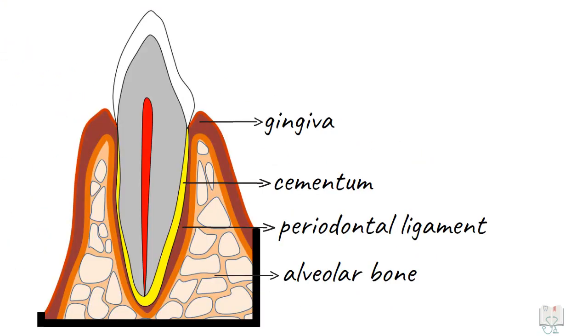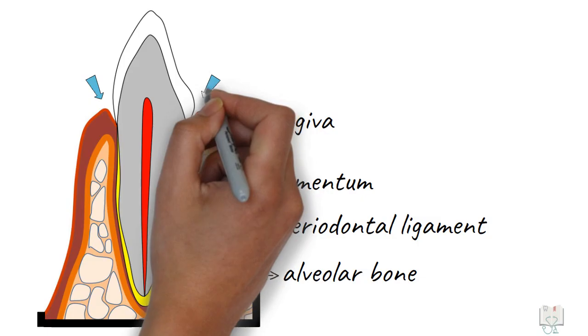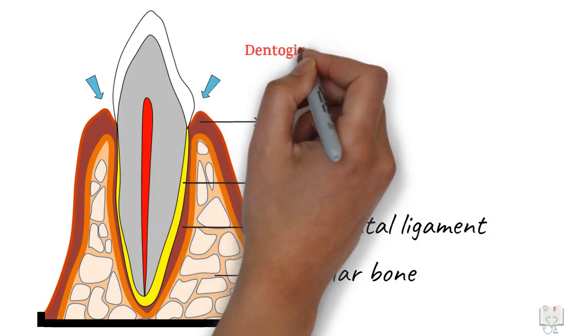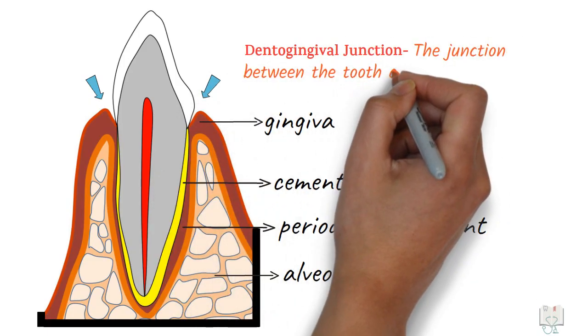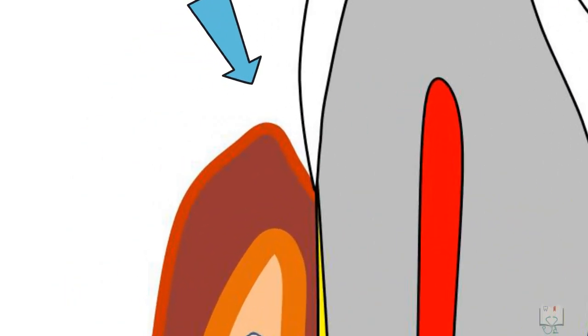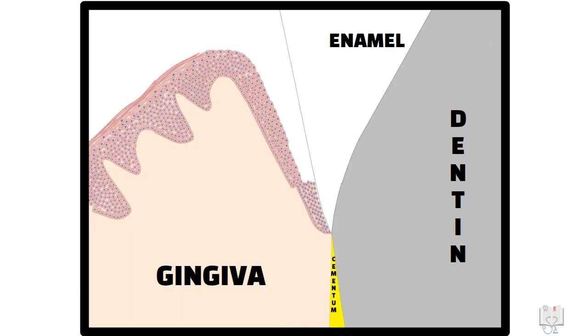If we take a look at the periodontium, the region where the oral mucosa meets the surface of the tooth is unique. The dento-gingival junction is the junction between the tooth and the gingiva. This junction has many parts. Let us take a look.